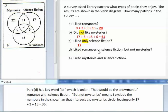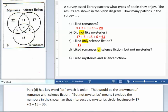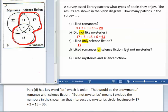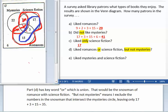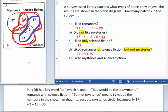Part D has the keyword OR, which is union. Romances or science fiction would be the snowman of romance with science fiction. But not mysteries means I exclude the numbers in the snowman that intersect the mystery circle, leaving only 17 plus 3 plus 15 equals 35.